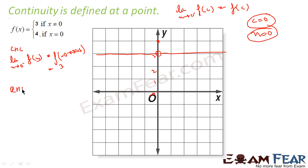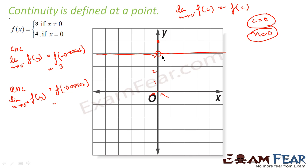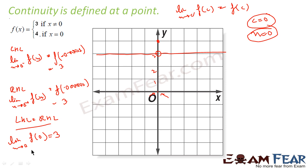Now the right-hand limit: limit as x tends to 0⁺ of f(x). Approaching from the right, I take any value just greater than 0 but not equal to 0, such as +0.0001. For x ≠ 0, f gives y = 3 again. So left-hand limit equals right-hand limit — the limit exists! I can say that the limit of f(x) as x tends to 0 exists and its value is 3.